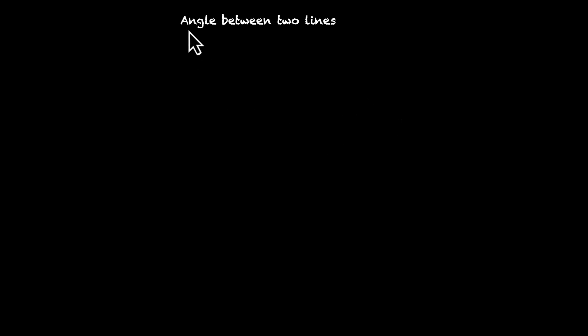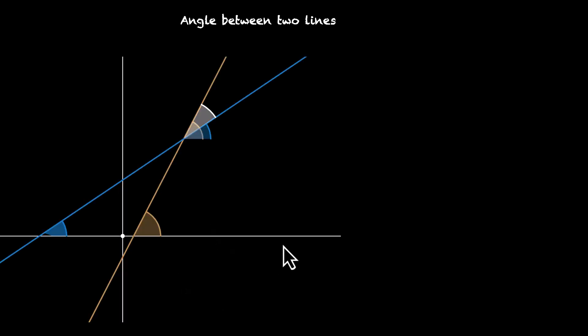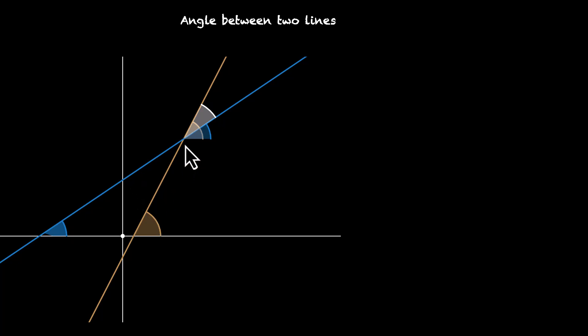In this video, we'll learn about the angle between two lines. So let's set things up. We have our x-axis, y-axis, and we have these two lines, blue and yellow, and they're intersecting at this point.